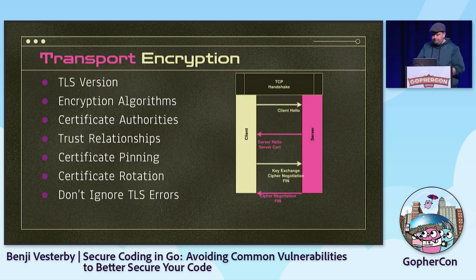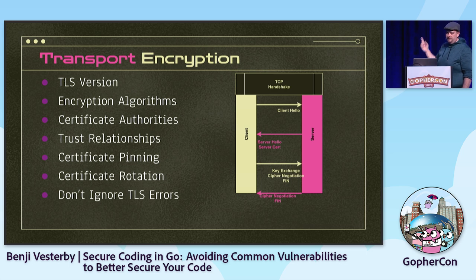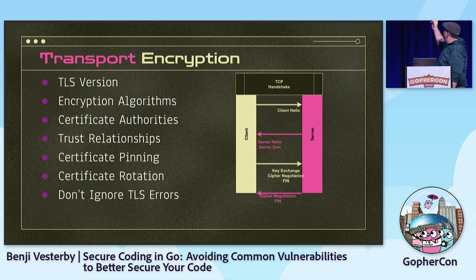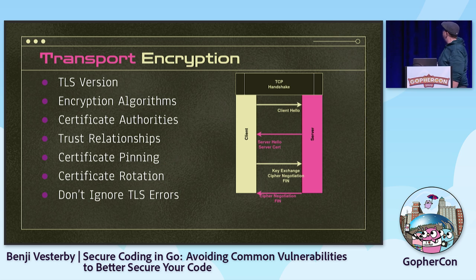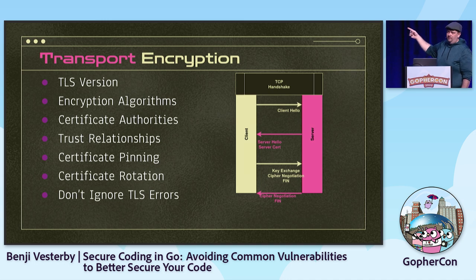Transport encryption is super important. If you're not familiar with the TLS handshake: the client says hello, the server responds with a certificate (public key), the client verifies that with a certificate authority, and then there's a key exchange for a symmetric key used for the rest of the communication. Don't ignore TLS errors — if you do, an attacker can man-in-the-middle your application. You should never ignore TLS errors. If you work for an enterprise, they should be able to pay for certificates or get them free from Let's Encrypt.